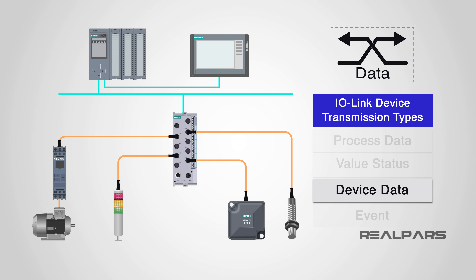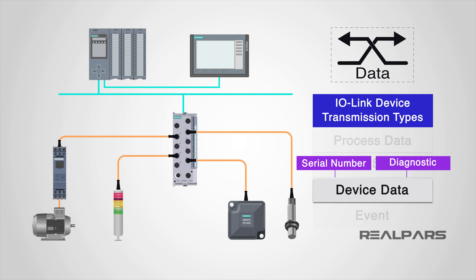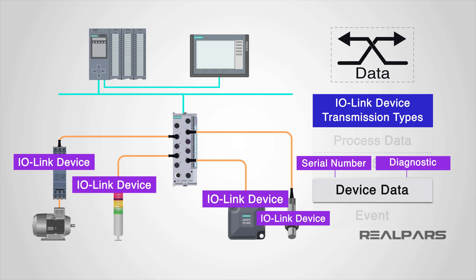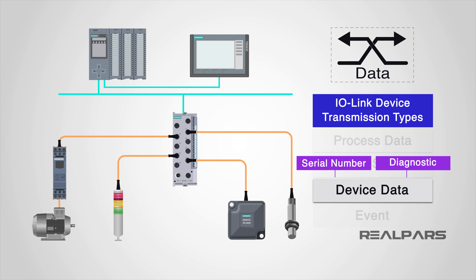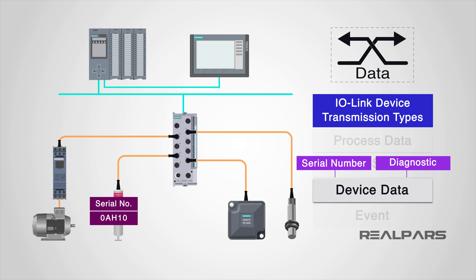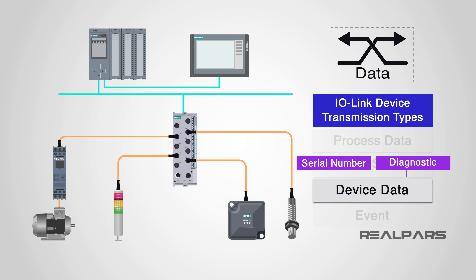The device data holds detailed information about a device. Basic information, such as the serial number or version number, and more advanced information, such as parameters or diagnostic information, are able to be retrieved from each IO-Link device. The device data is transmitted acyclically at the request of the IO-Link master, meaning it is not automatically transmitted but will be transmitted after a request from the IO-Link master. Device data can be read from the device, but also written to.